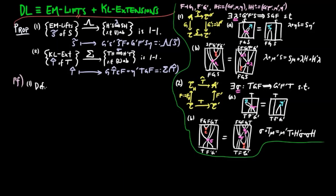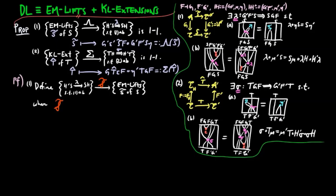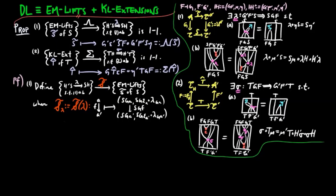To prove one, we define the map, which we'll call Kleis, from the collection of natural transformations λ satisfying 1A and B, to the collection of Eilenberg-Moore lifts S̃ of S, where Kleis takes an object A to the Eilenberg-Moore object (S, G, A) with action S·G·ε_A·λ_{G,A}, and the morphism F to S·G·F.